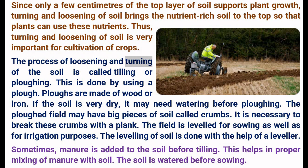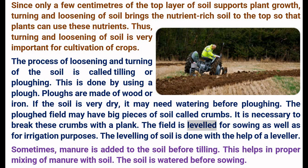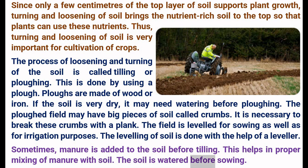Thus, turning and loosening of soil is very important for cultivation of crops. The process of loosening and turning of the soil is called tilling or plowing, done using a plow. Plows are made of wood or iron. If the soil is very dry, it may need watering before plowing. The plowed field may have big pieces of soil called crumbs; it is necessary to break these with a plank. The field is leveled for sowing and irrigation purposes using a leveler. Sometimes manure is added to the soil before tilling to help it mix properly with the soil.